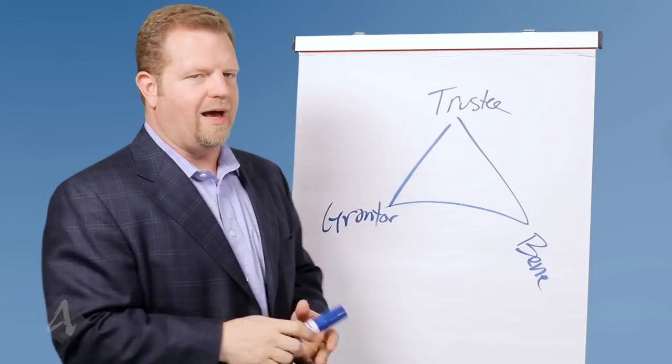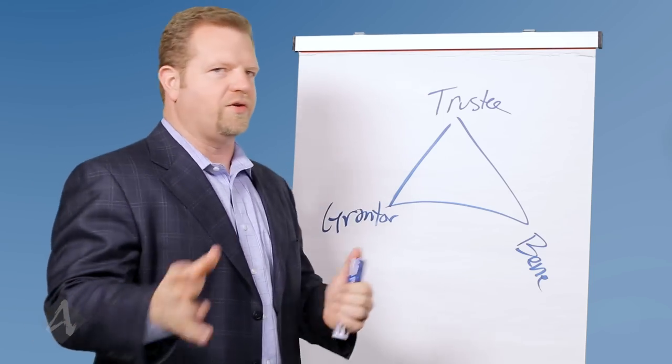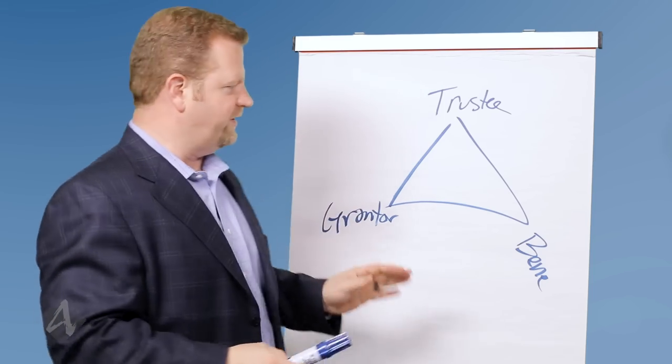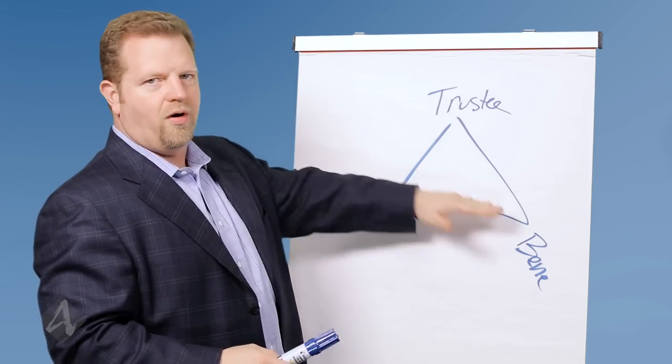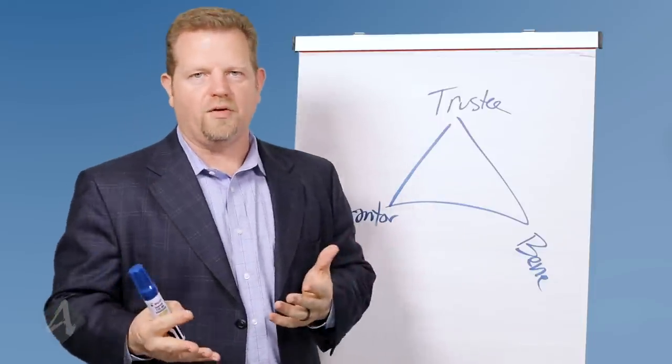Anytime you have a living trust, asset protection trust, federal remainder trust, personal property trust, irrevocable life insurance trust, they're all just a version of the same thing with different parties and different requirements for who can act in what position.